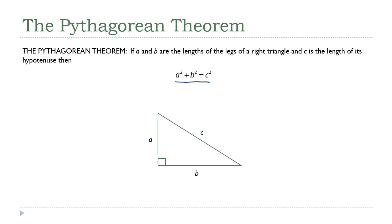It doesn't matter which leg gets to be a and which leg gets to be b — those two are interchangeable. The only part you're really locked in on is c. C has to be the hypotenuse of the right triangle, and the hypotenuse is always the side opposite the right angle.